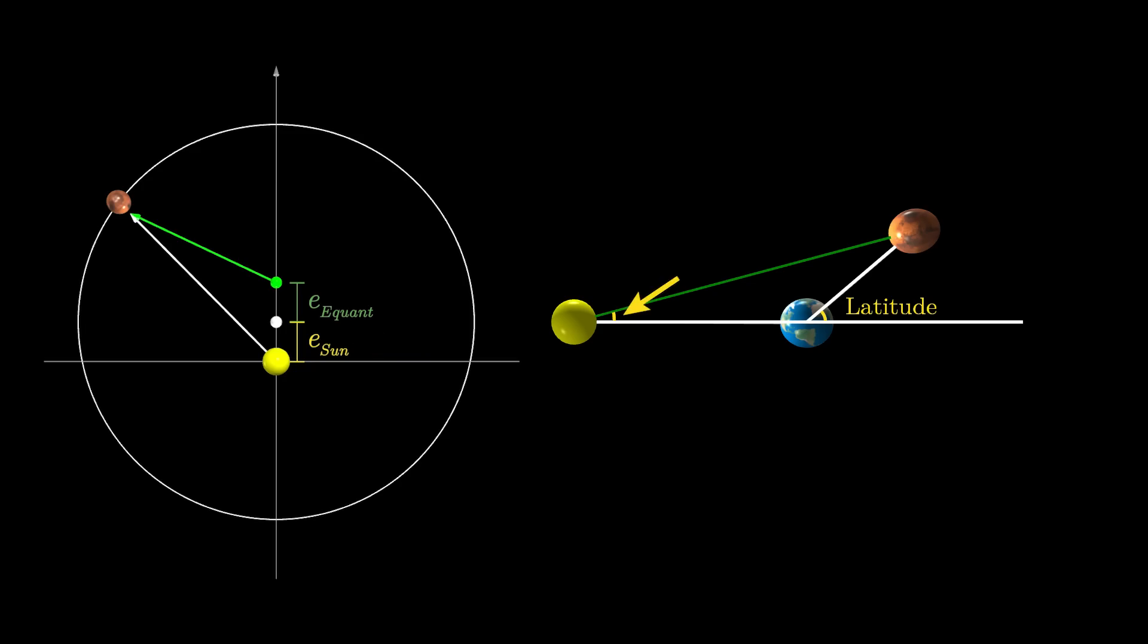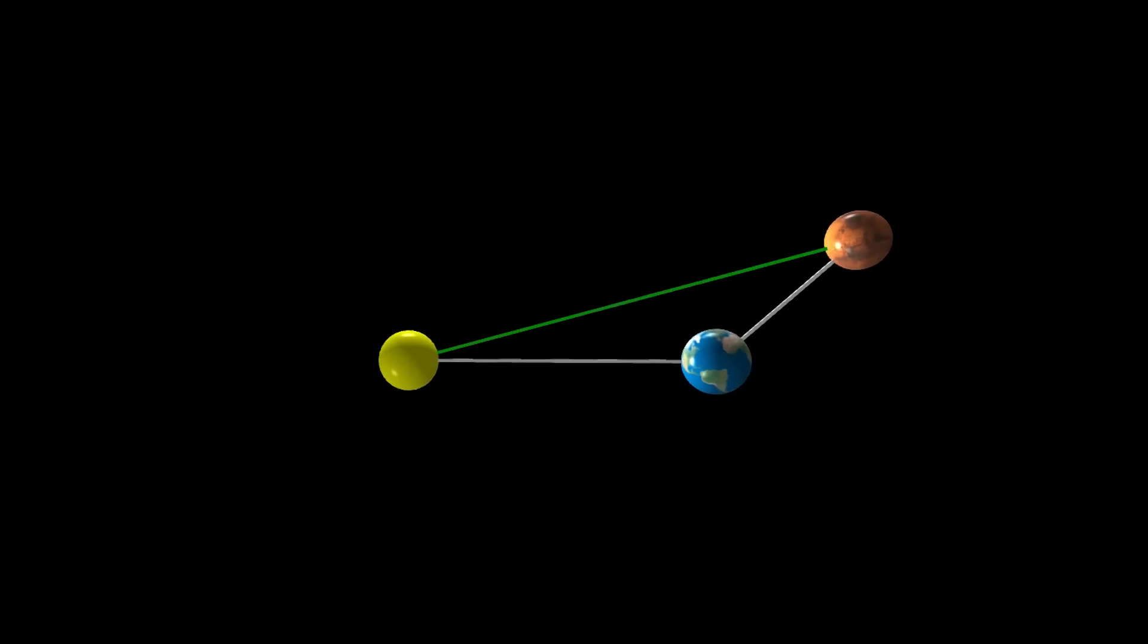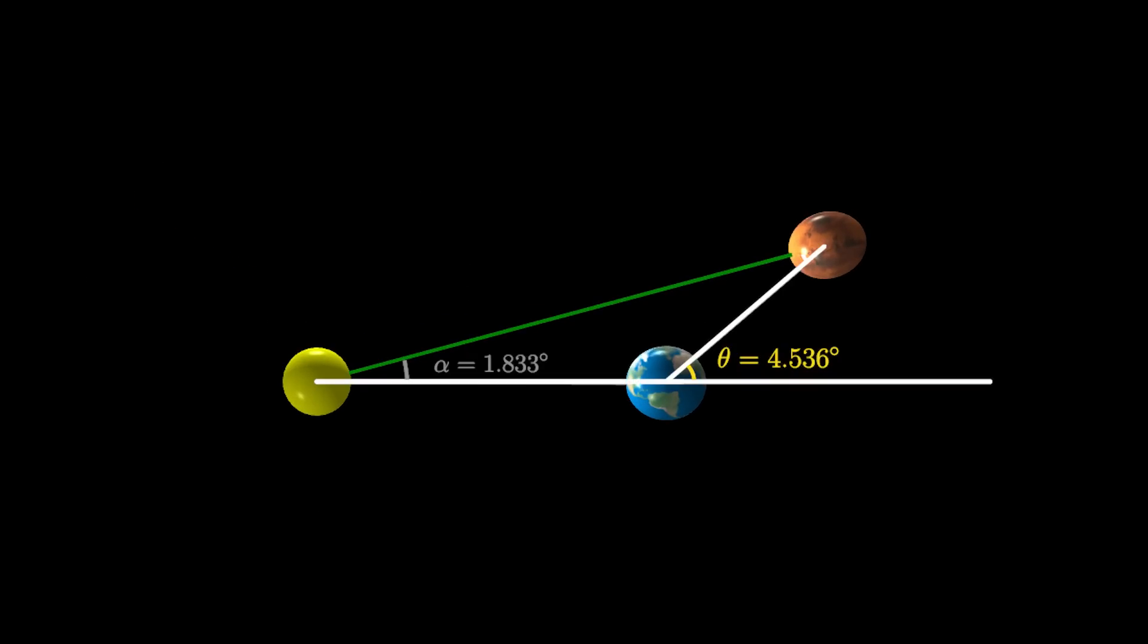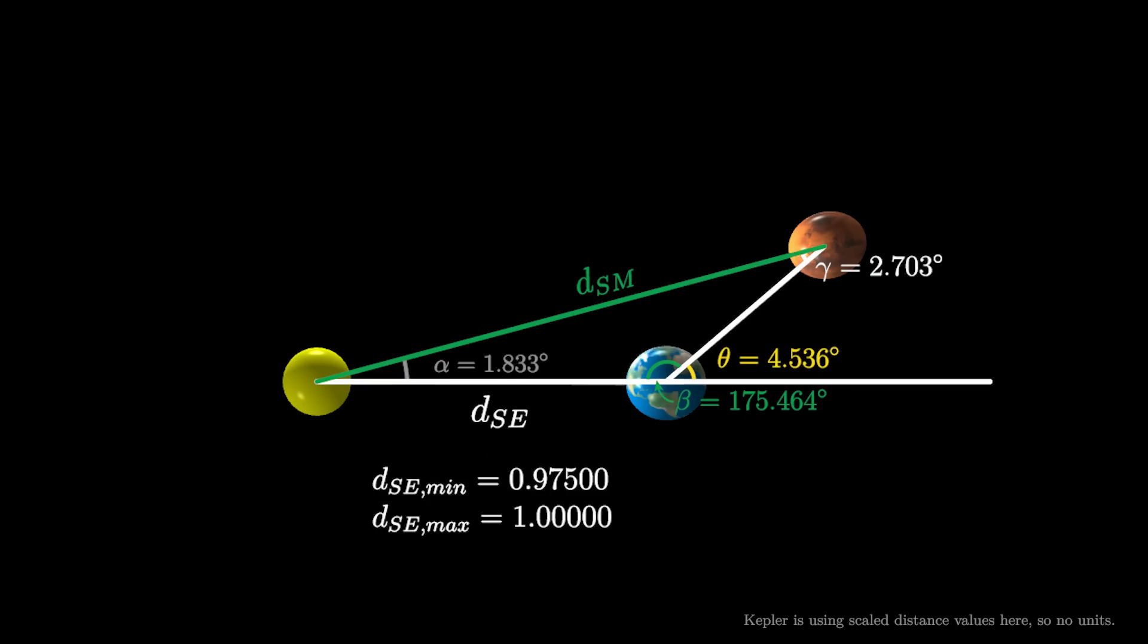The orbit of Mars is slightly tilted relative to Earth's orbit. Taking the value Kepler knew for this tilt and Tycho's observed latitude for the 1585 opposition, Kepler was able to construct this triangle and compute all of its angles. The base of the triangle is the distance between the Sun and Earth, which Kepler had an upper and lower estimate for, again thanks to Tycho's observations.